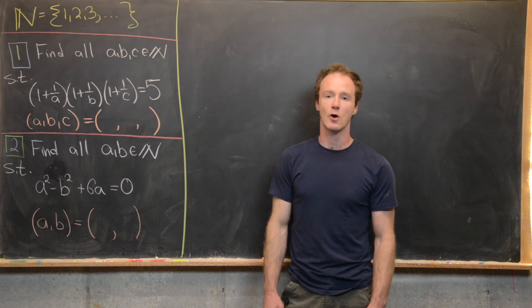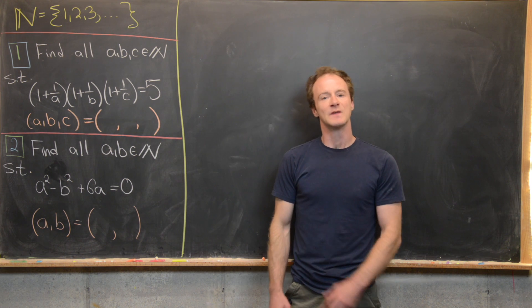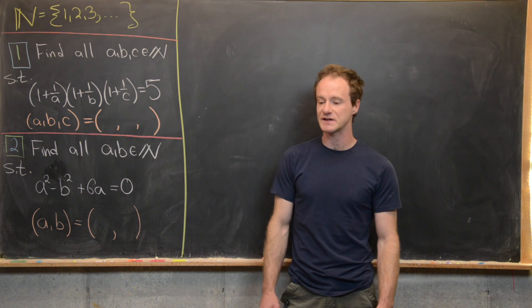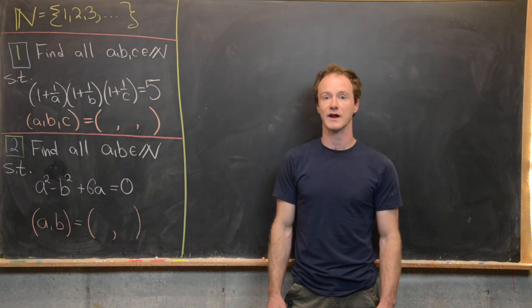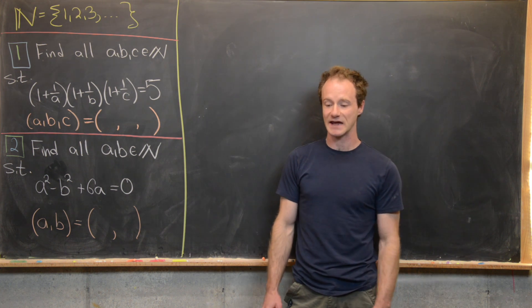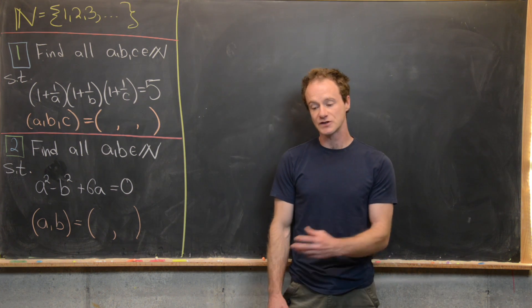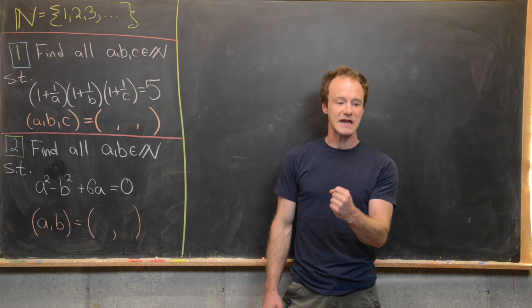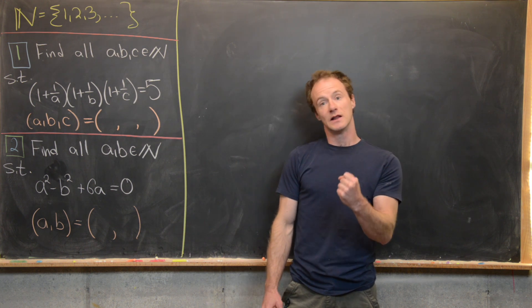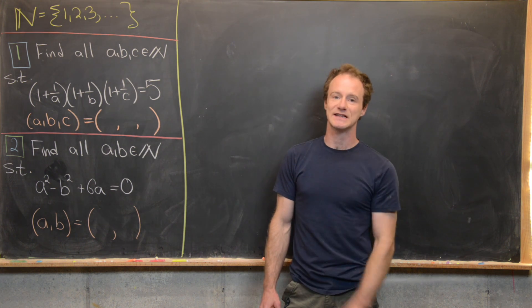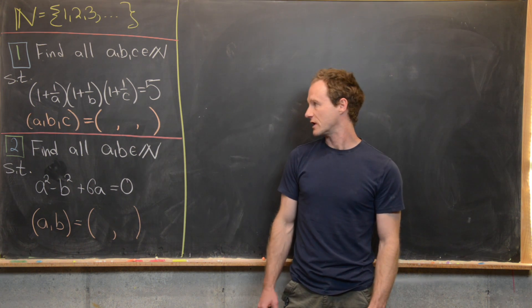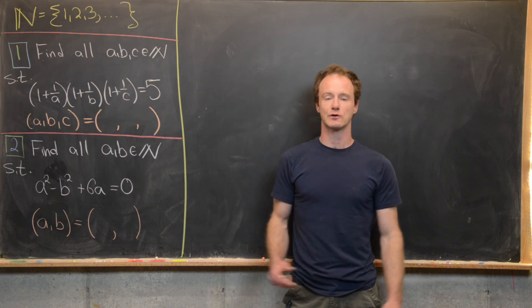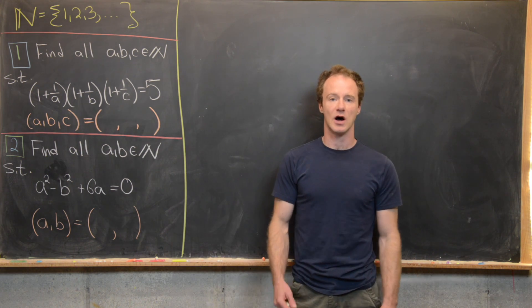Before we get going, I'll give you a hint. The first hint is you can assume some ordering on these numbers a, b, and c. So maybe you want to assume that a is the smallest, b is bigger than or equal to a, and c is bigger than or equal to b. Then use that to get some sort of bound on a.